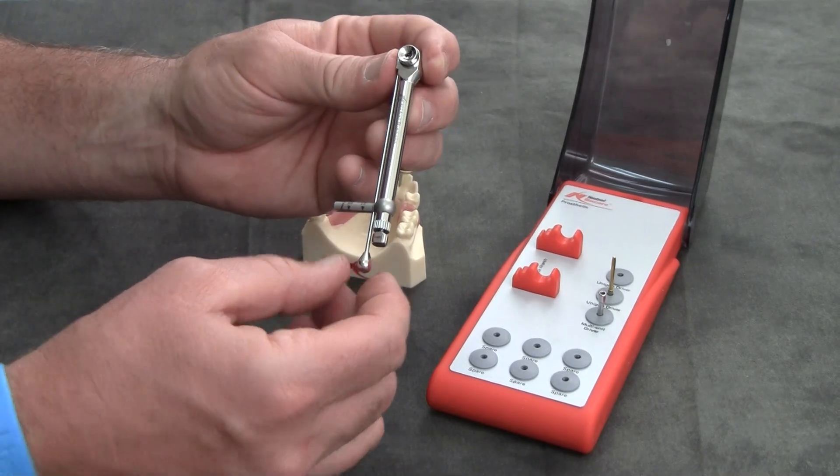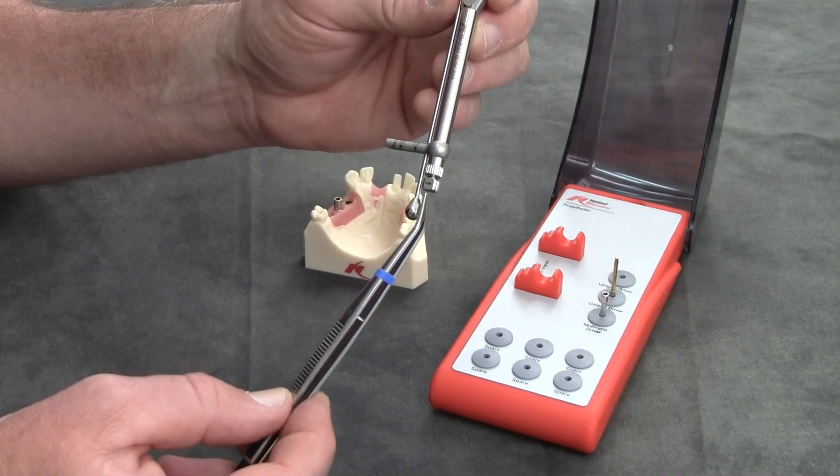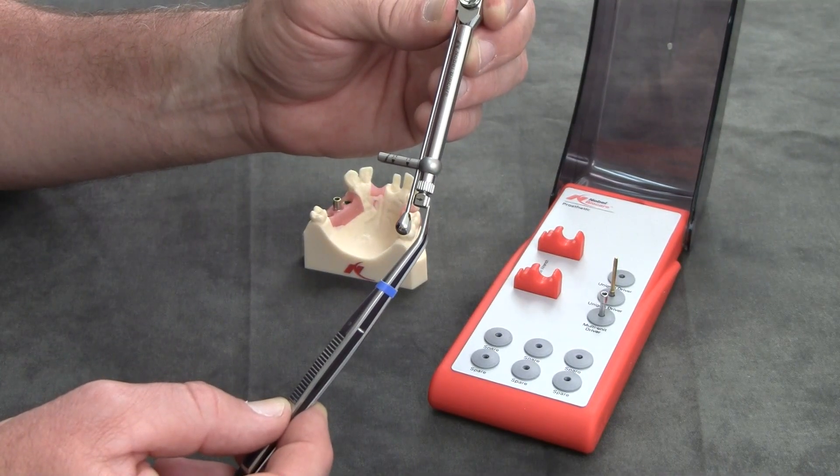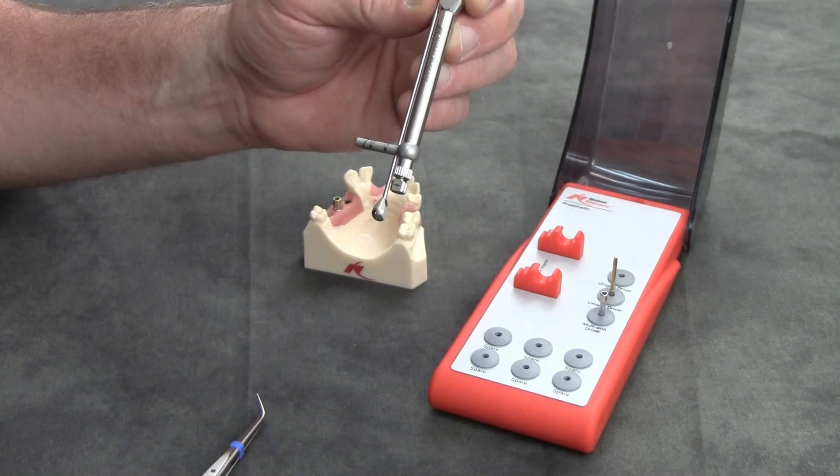One important feature is to make sure that the directional arrow here at the back of the torque wrench is facing you. I'm going to zoom in here a little so you can see that.